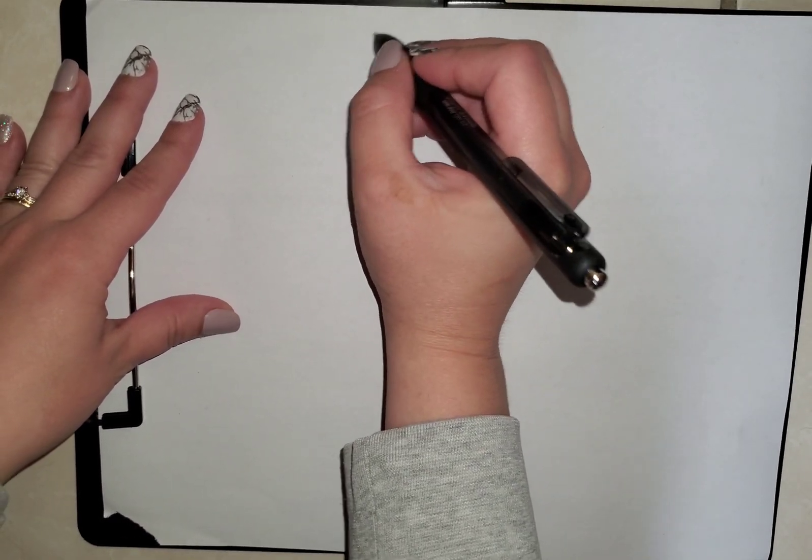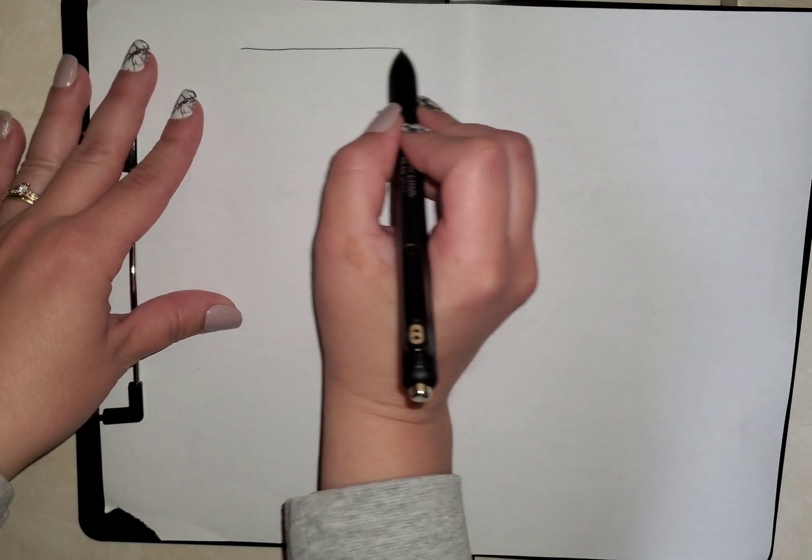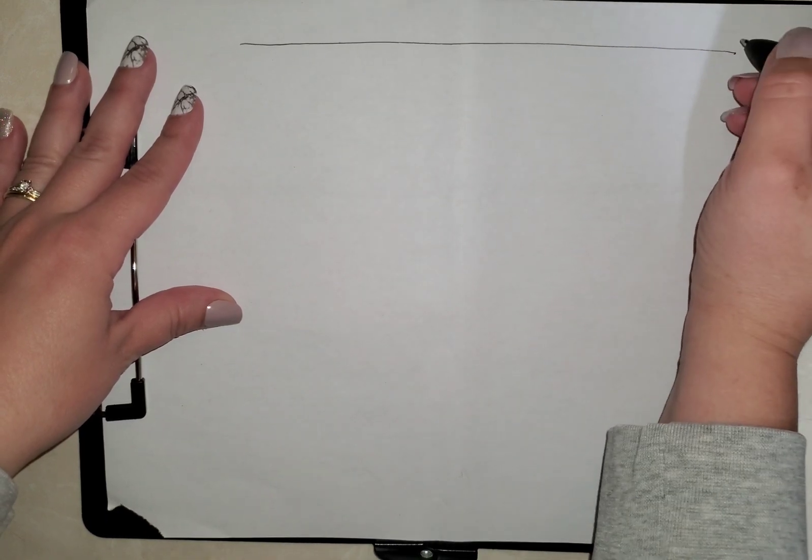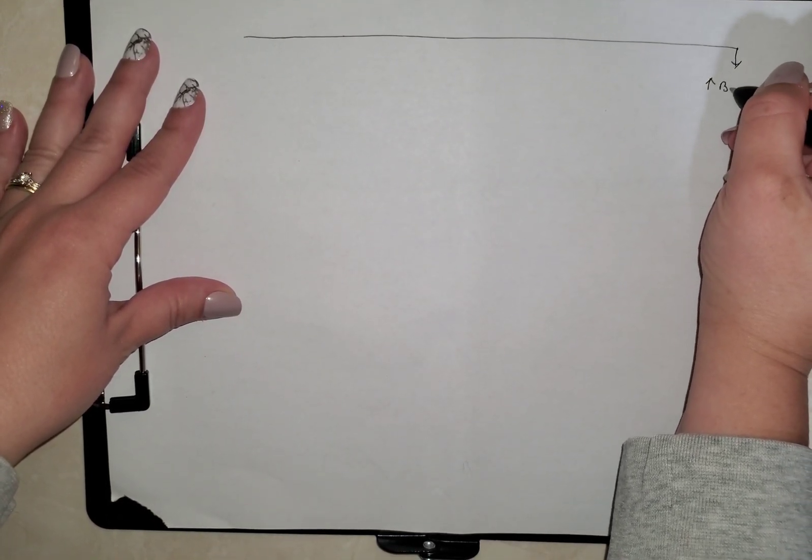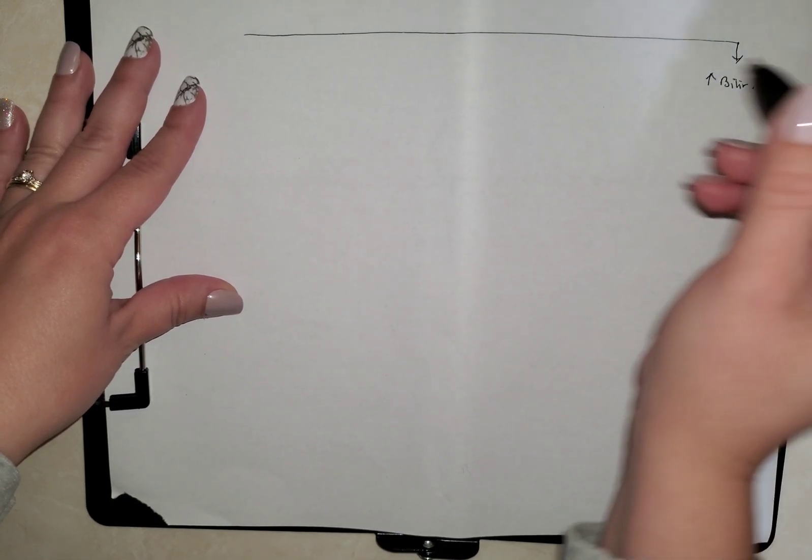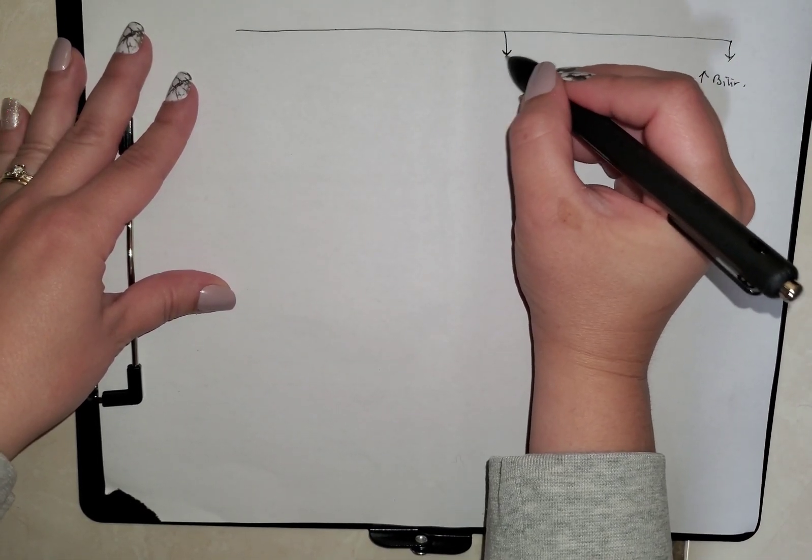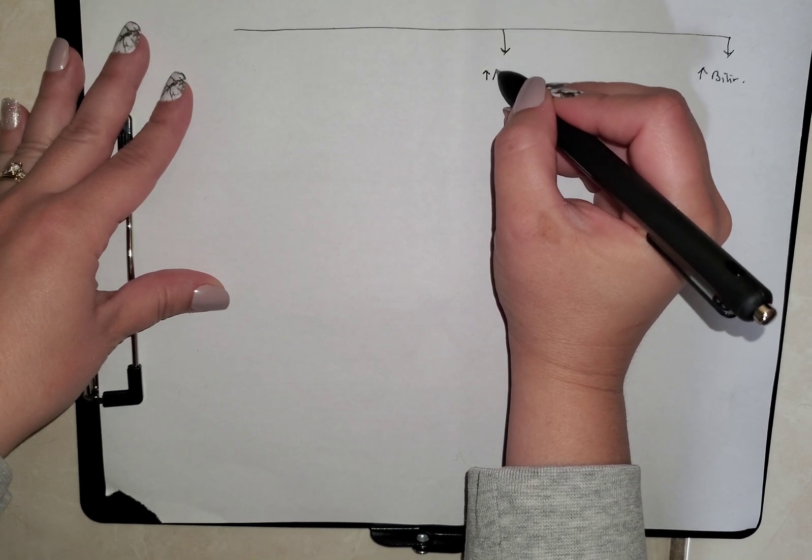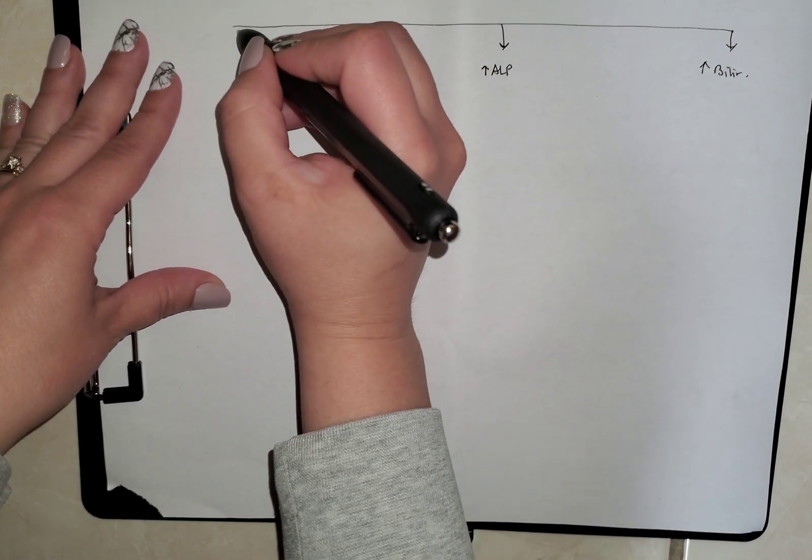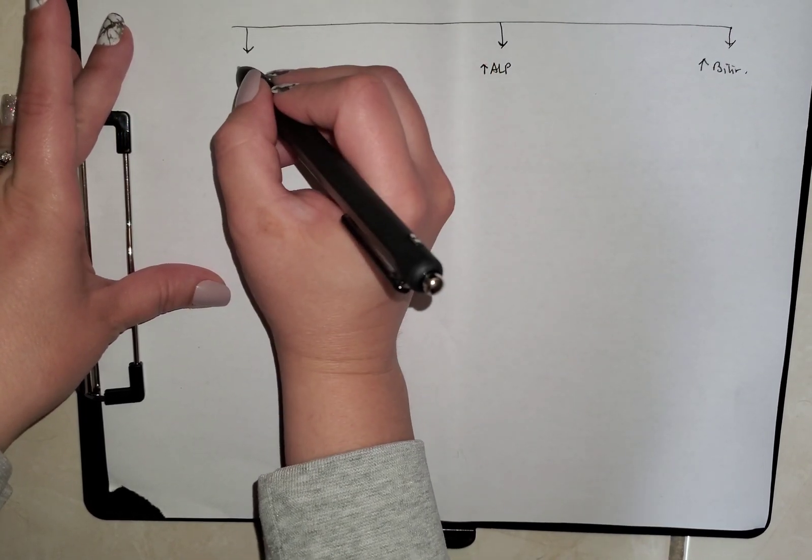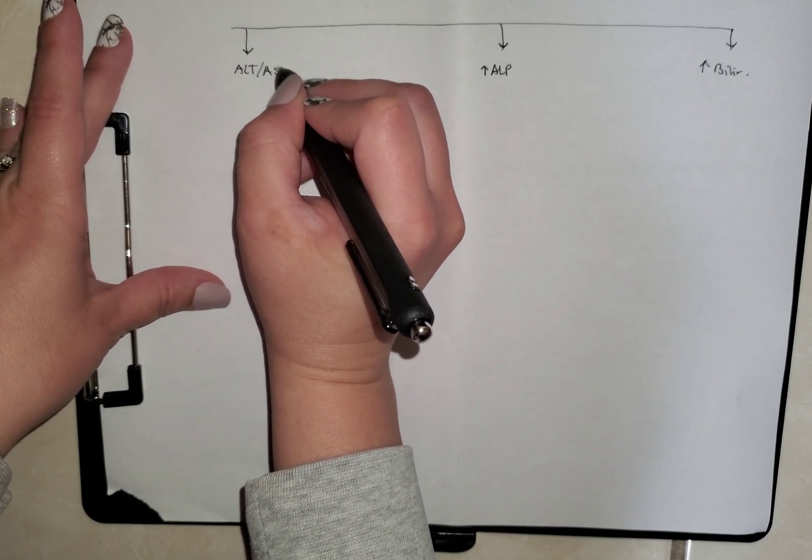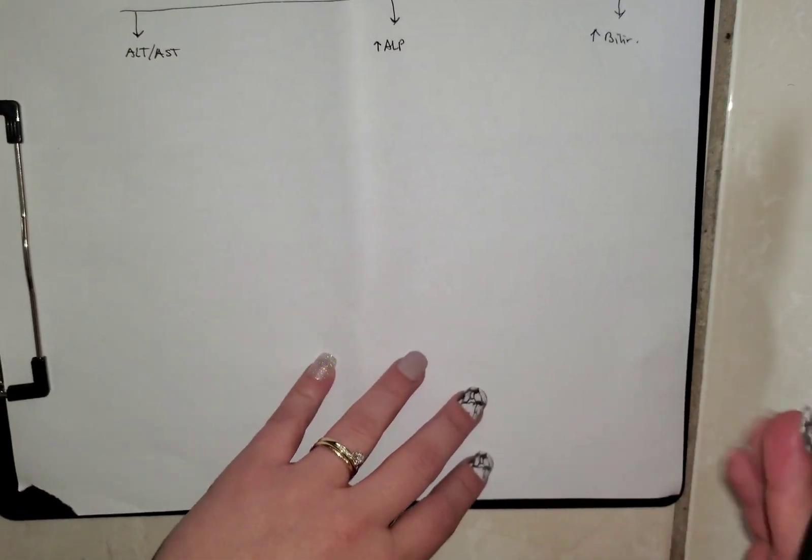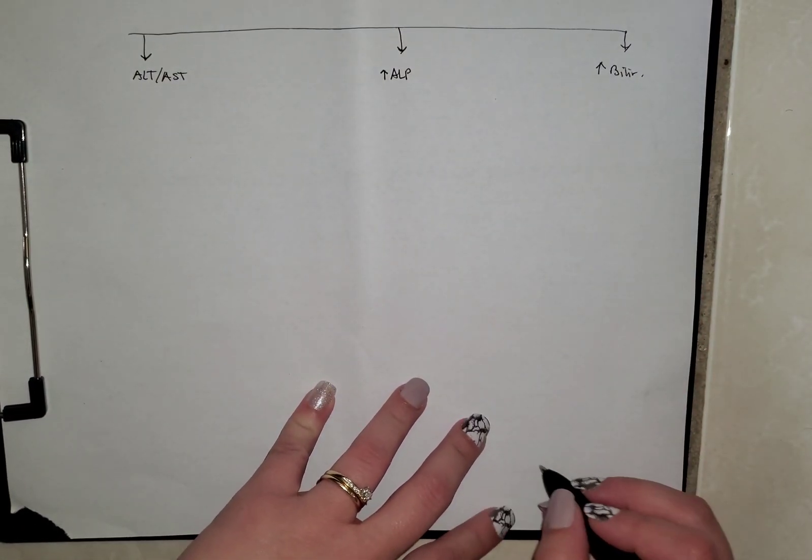If you have elevated enzymes, it can be one of three things. You will either have increased bilirubin, you'll have increased ALP, or you'll have most likely an increase in ALT-AST, the transaminases. Before we go further, I want you to know what each one of these means.